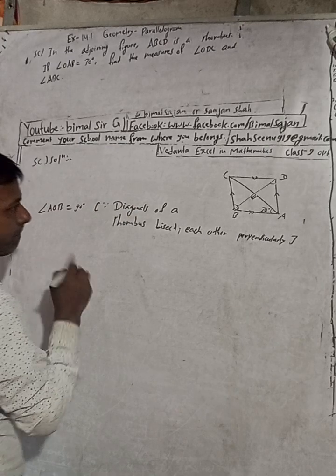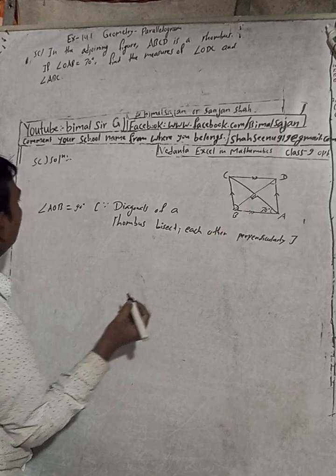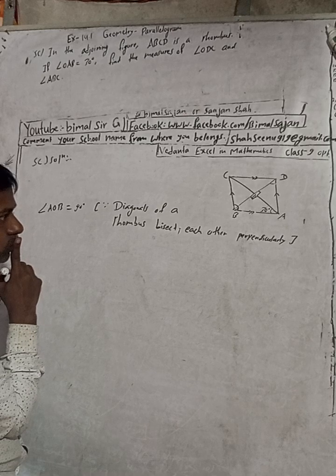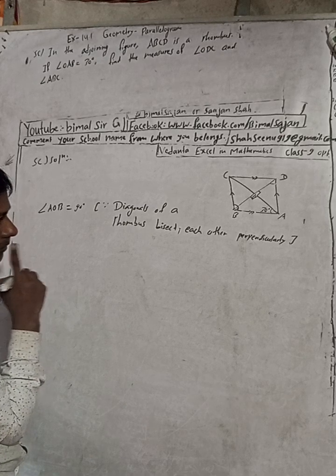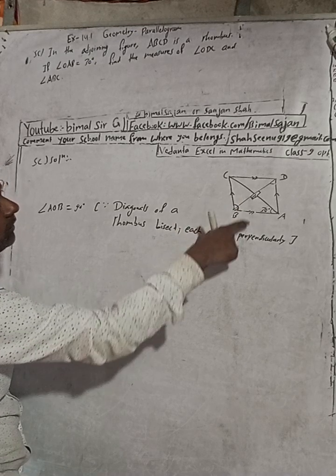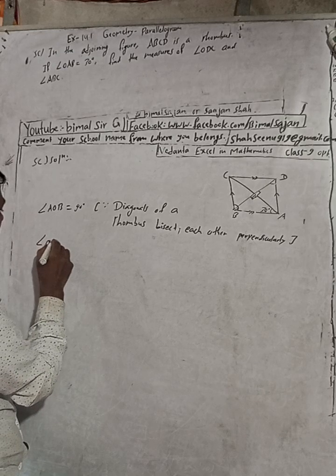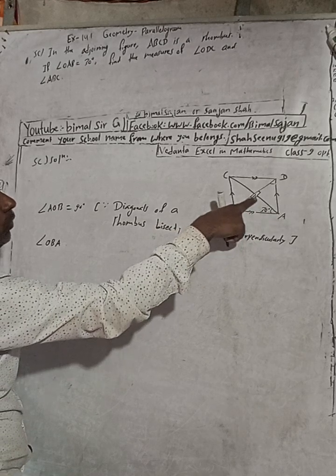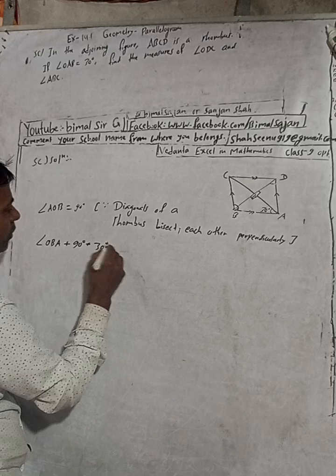So now in triangle OAB — if this angle is 90 degrees, then angle OBA plus 90 degrees plus 30 degrees will equal 180 degrees.